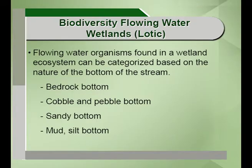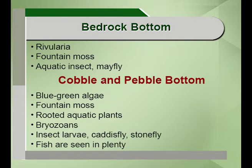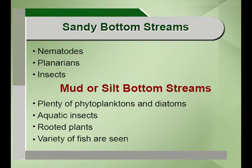The flowing water organisms can be classified into four types based on bottom substrate: bedrock bottom, sandy bottom, cobble and pebble bottom, and mud and silt bottom. The bedrock bottom comprises fountain moss, aquatic insects and Rivularia. Cobble and pebble bottom involves blue-green algae, fountain moss, bryozoans, fishes in plenty, insect larvae including caddisfly, stonefly and rooted aquatic plants. In sandy bottoms, nematodes, roundworms, planarians and insects can thrive. The mud and silt bottom has plentiful phytoplankton, diatoms, shelled organisms, rooted plants and a variety of fish.